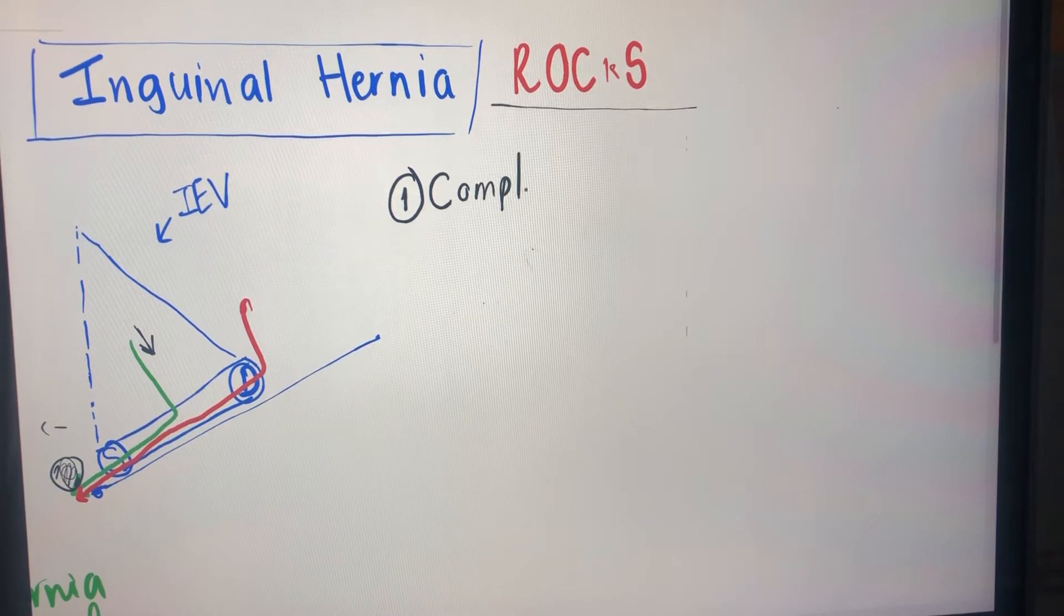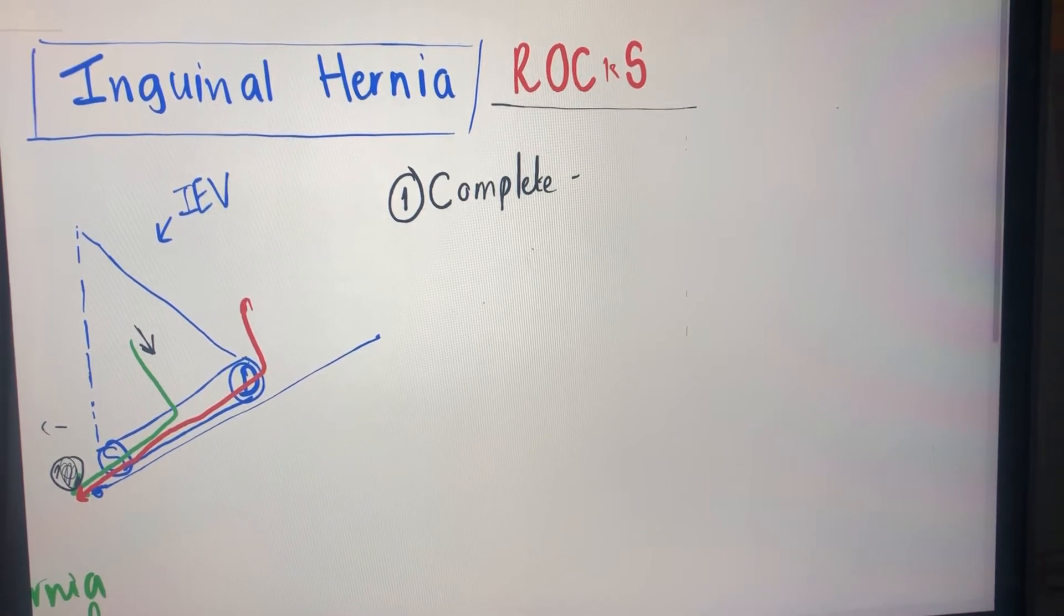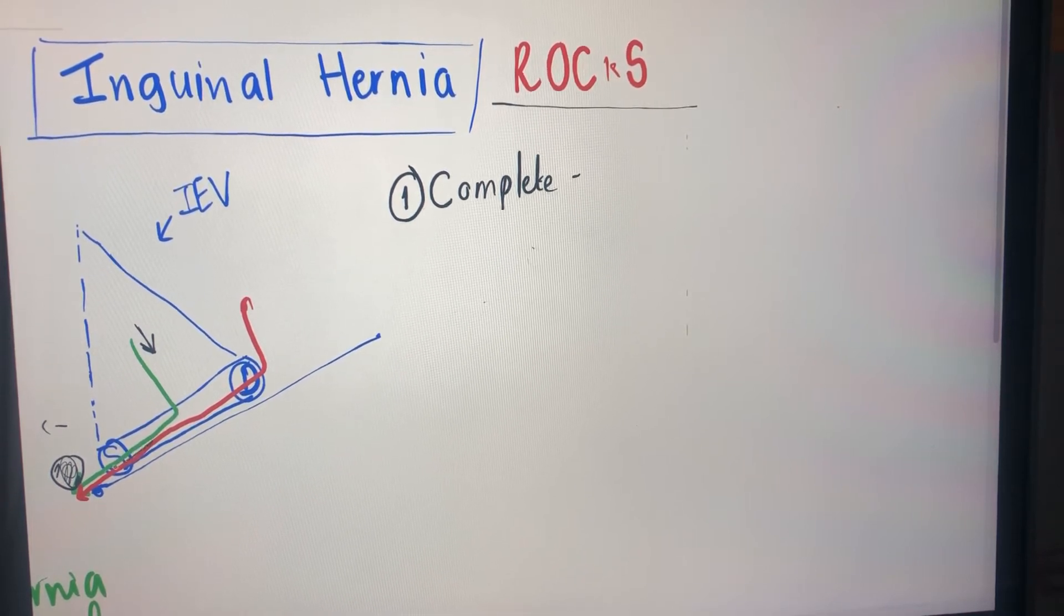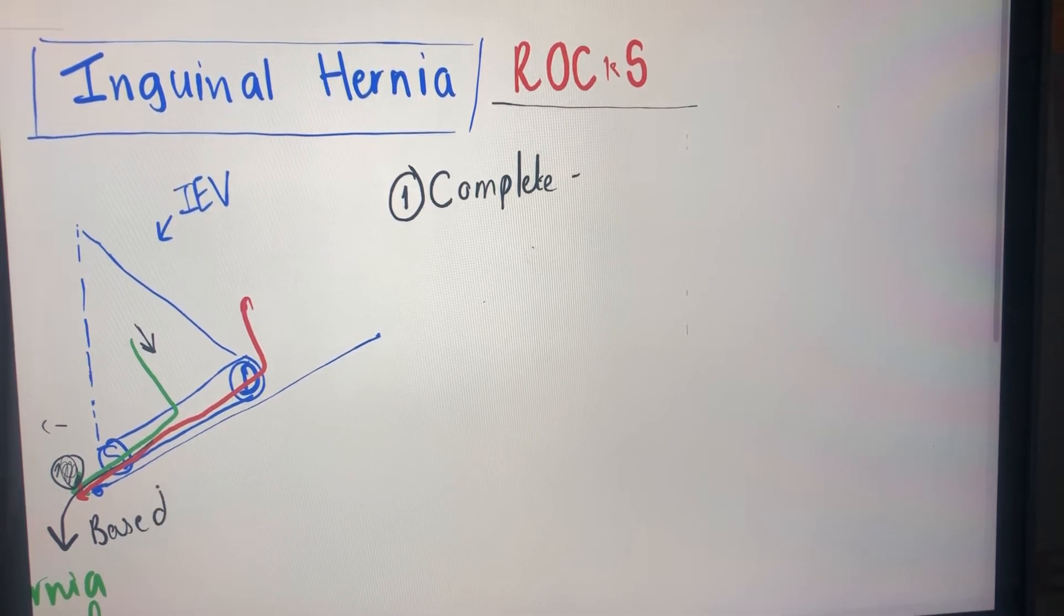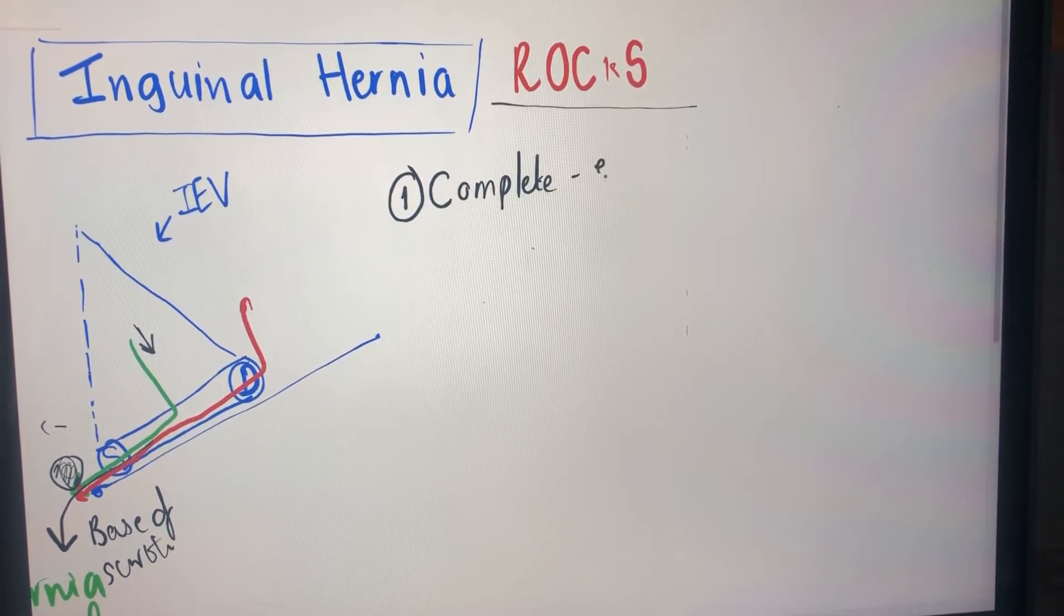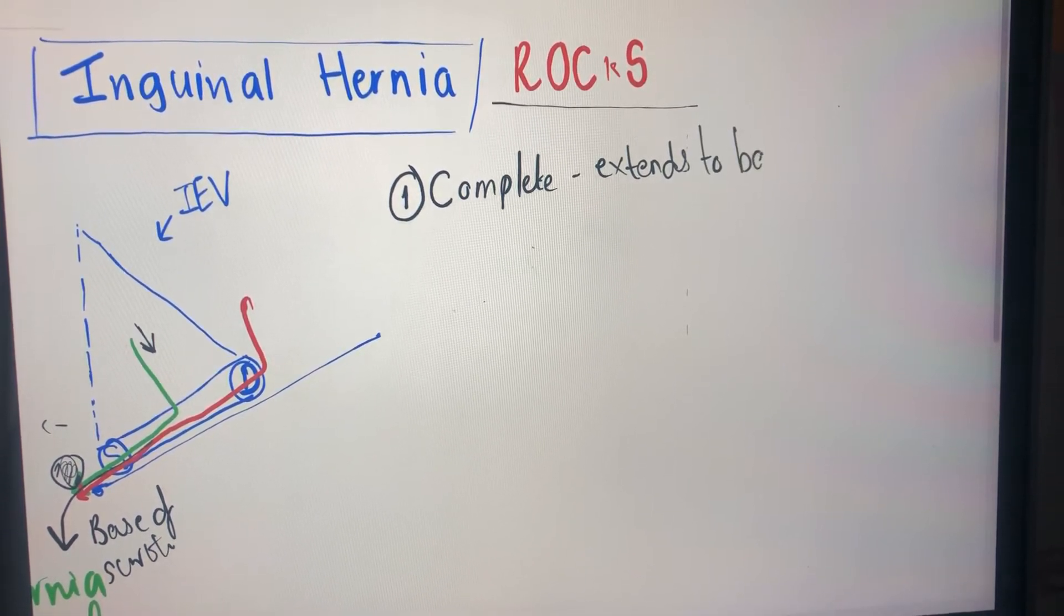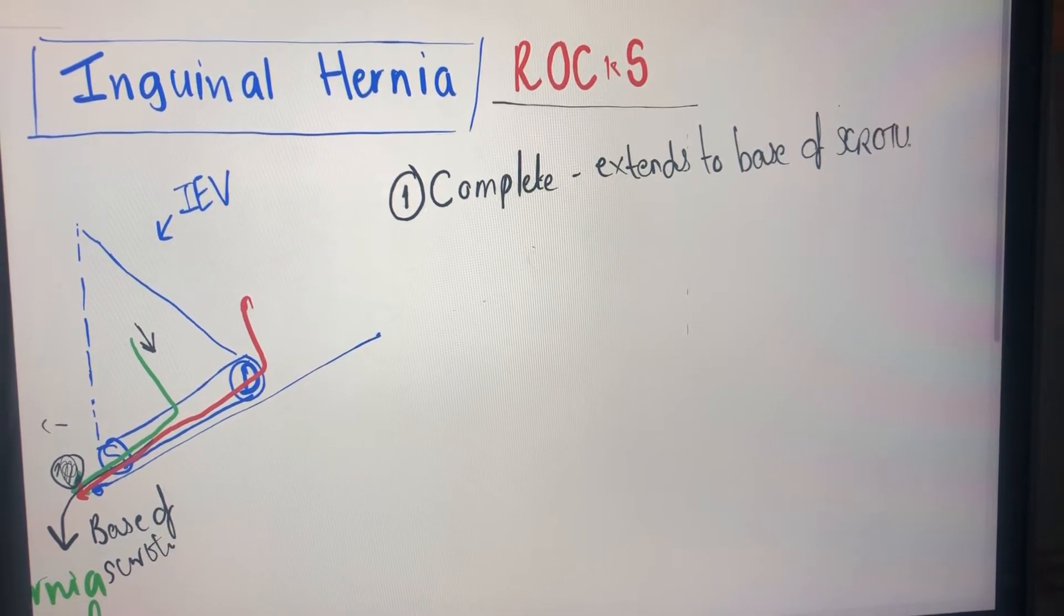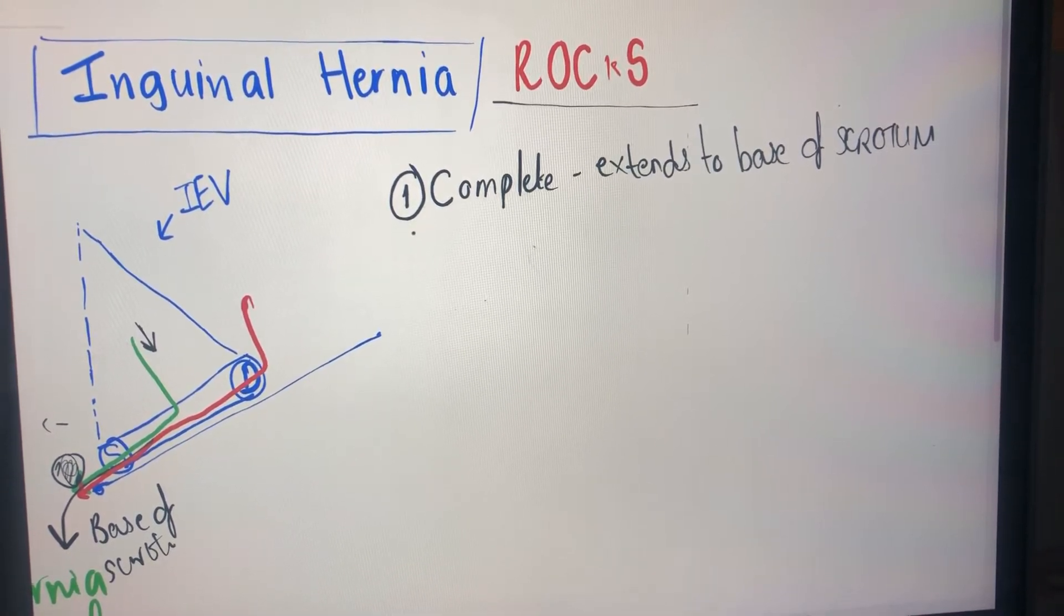So what is a complete? Well a complete inguinal hernia is one which goes all the way, so if this was the hernia extending here, whether it's direct or indirect, it goes all the way down to the base of the scrotum. Okay, I won't write that twice for you, so complete extends to base of scrotum. Now so similarly if we've got complete, then the opposite of it would be your incomplete.